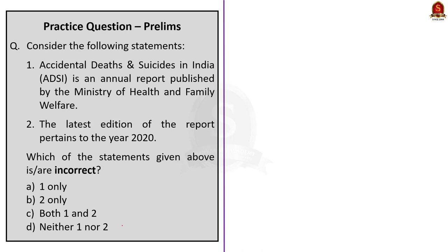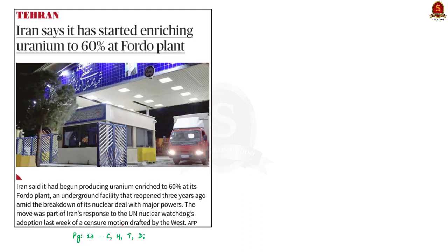Have a look at this news article. Iran has started enriching uranium to 60% in an underground facility called Fordo that reopened three years ago. The move was part of Iran's response to the UN nuclear watchdog's adoption of a censure motion against it. In this context, let us discuss a few points about the Iran and Western world conflict.